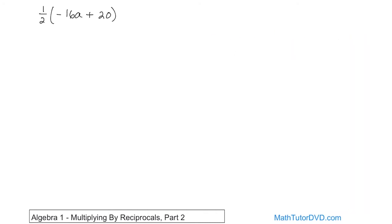We have a number. It's just a fraction, which another word for that is a reciprocal, on the outside, so we can distribute that into that term and then also separately to that term. So here we have this. What is 1 half times negative 16a? Well, it is a positive times a negative, so that's going to give us a negative answer. And then the 1 half times the 16 can be written as 16 over 2 times a.